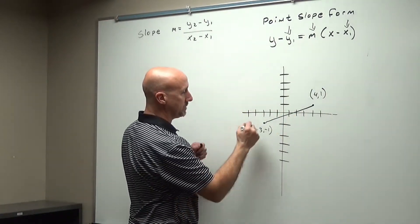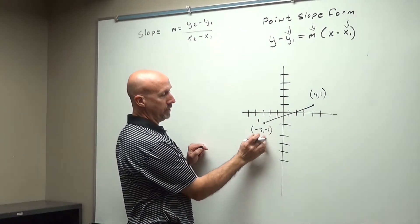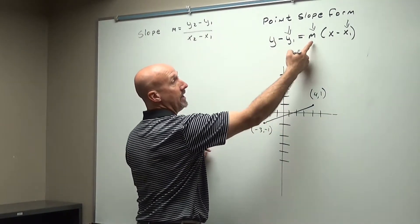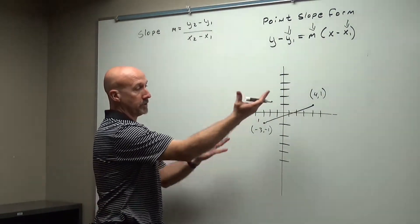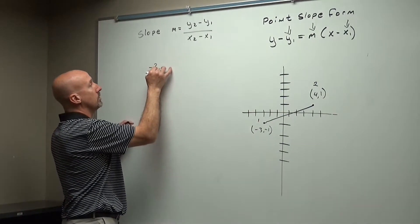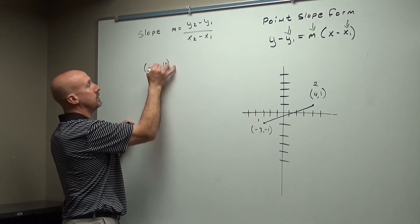So if I say this is my first point, all I'd have to do is plug in my x, my y, x, and my y, and then I have to find m, and I'm totally done. So the first thing we need to do is find my m, my slope. So I'm going to take my two equations here, my two coordinates,